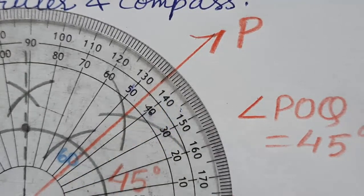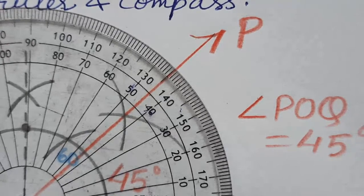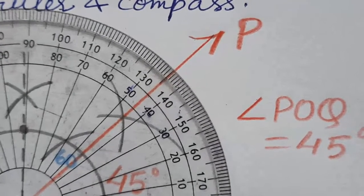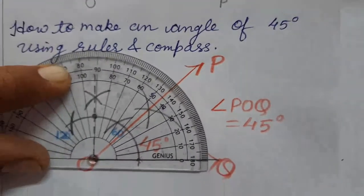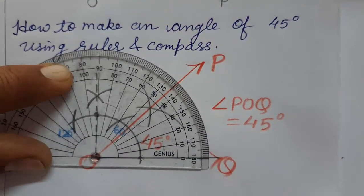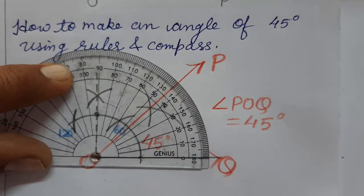So in this way we have completed. I hope you understood how to make an angle of 45 degrees using ruler and compass. Thank you so much for watching the video.